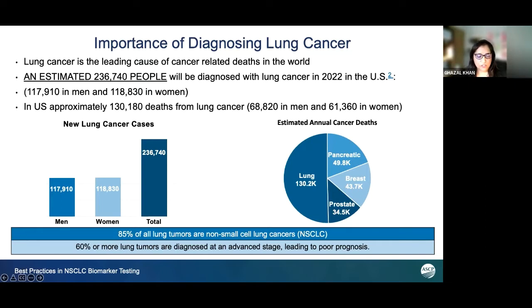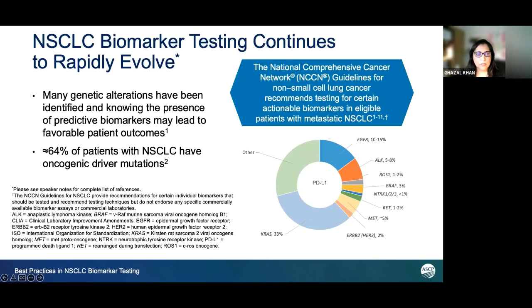The challenging part is that 60% or more lung tumors are diagnosed at an advanced stage, which basically leads to poor prognosis. The good news is that many mutations have been identified, which are linked with approximately 60% of patients with non-small cell carcinoma, and testing for such mutations is available. This may lead to favorable patient outcomes. This is basically the topic today: how can we collect the right specimen for such testing.